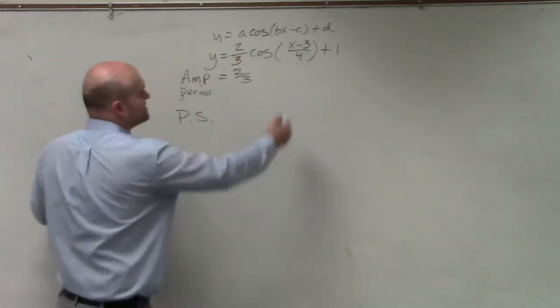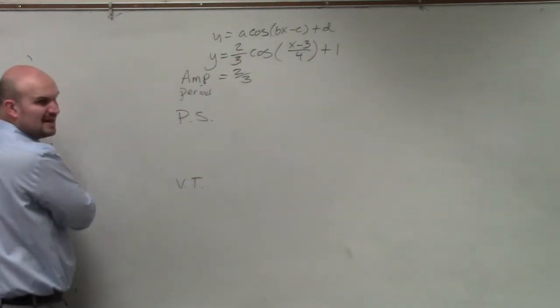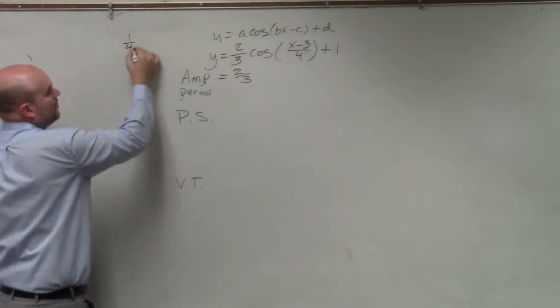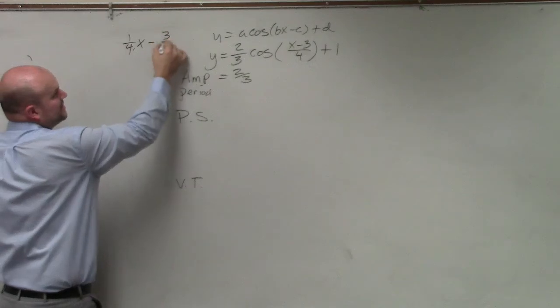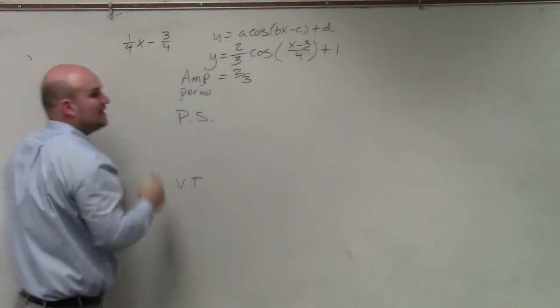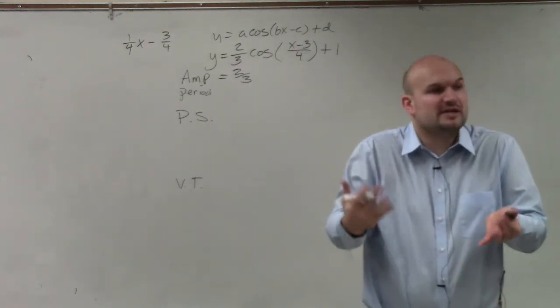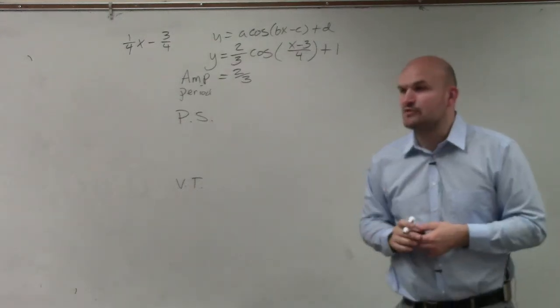If you guys remember, I said we could write x minus 3 over 4 in a separate way. We could also write this as 1 over 4 times x minus 3. Basically, what I mean is we could divide that 4 into both of those terms and write them as fractions. That's an alternative form to writing x minus 3 over 4.